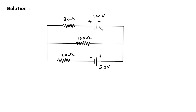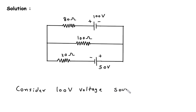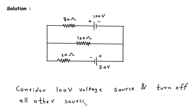First we will consider the 100 volt voltage source and turn off all other sources. Here we can see there is only one other source. So if we turn off this 50 volt voltage source, this will be a short circuit.